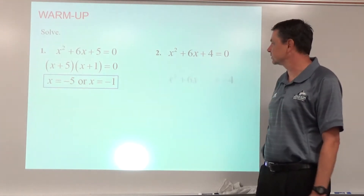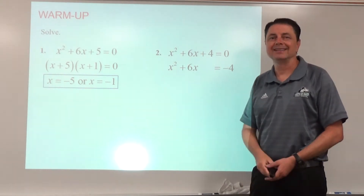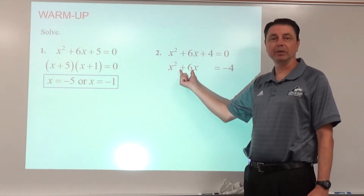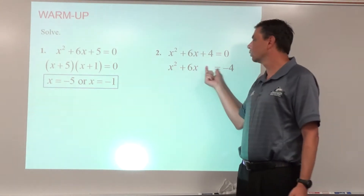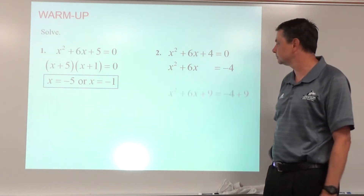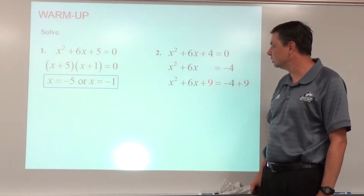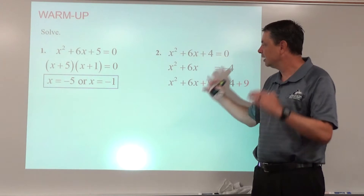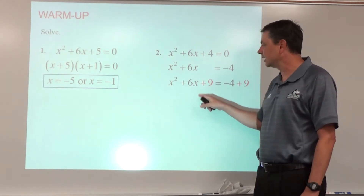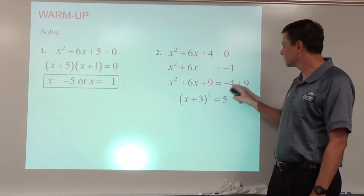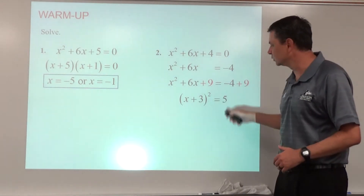We move the constant to the other side by subtracting 4 from both sides, then find the completing-the-square number to add to both sides. We divide b by 2 to get positive 3, then square that to get positive 9. We add 9 to both sides — at that point this becomes a perfect square trinomial, so we can write it as the binomial squared: (x + 3)², and the right side simplifies to 5.